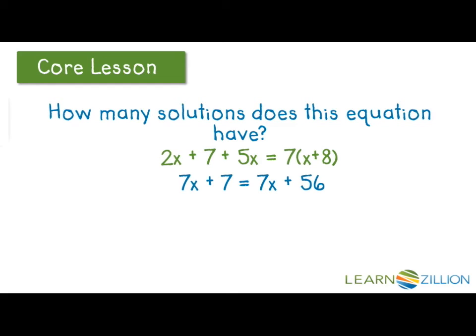So I'm left with 7x plus 7 equals 7x plus 56. I'm going to subtract 7x from both sides, and I'm left with 7 equals 56. So I know that's not true, so this equation also has no solution.